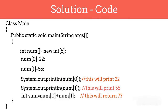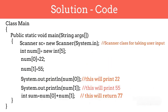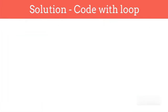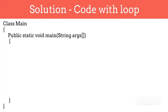Instead of taking static input, we will take input from the user using the Scanner class. We will use sc.nextInt() to take an integer as input from the user. We will replace all the static numbers with user inputs. Now you can see that as the number increases, our lines of code will also increase — for saving 10 numbers, we have to write 10 lines. So to reduce the lines of code, we can use a loop, writing it from 0 to n, where n is the size of the array.